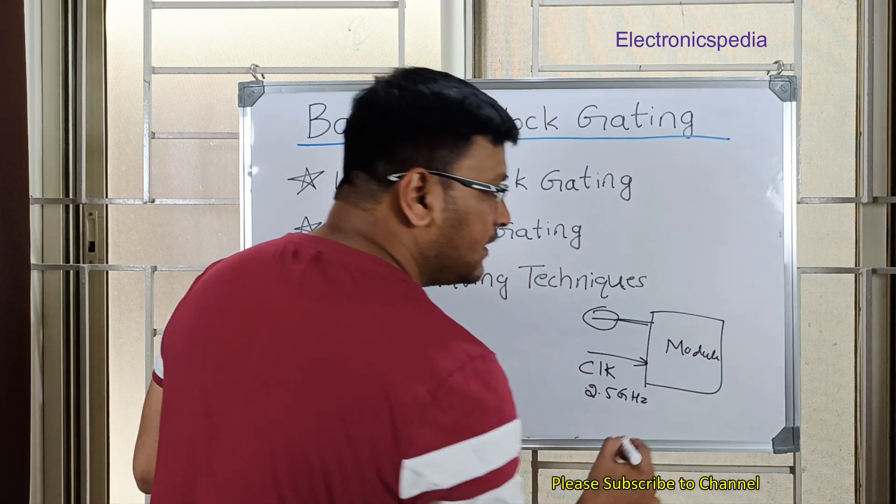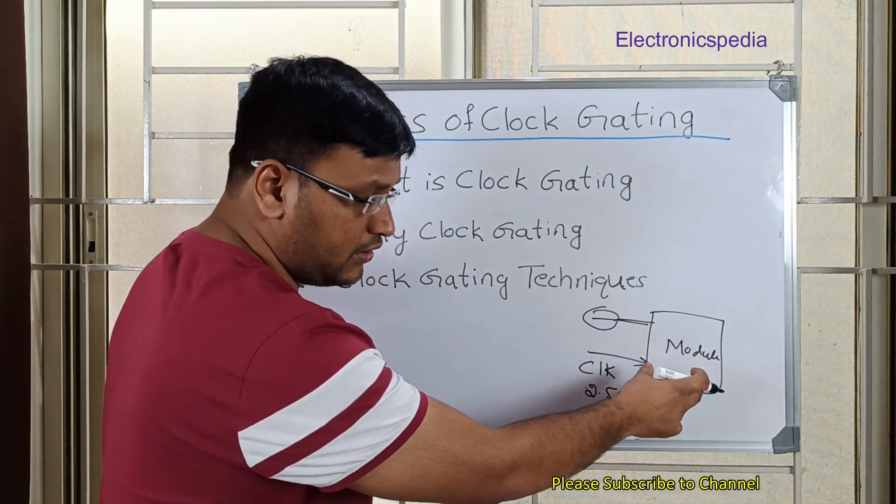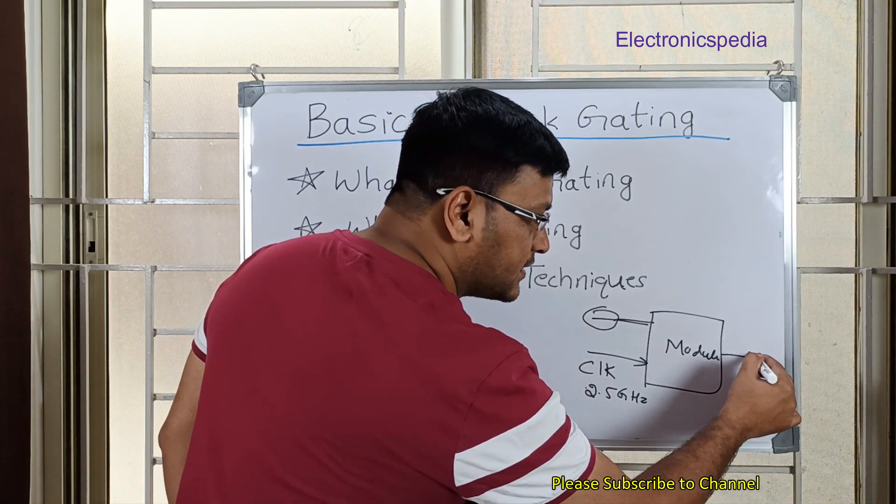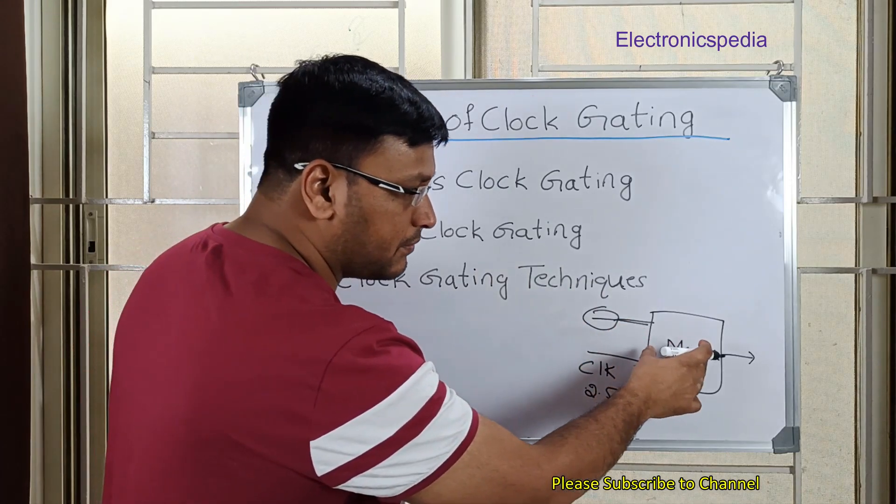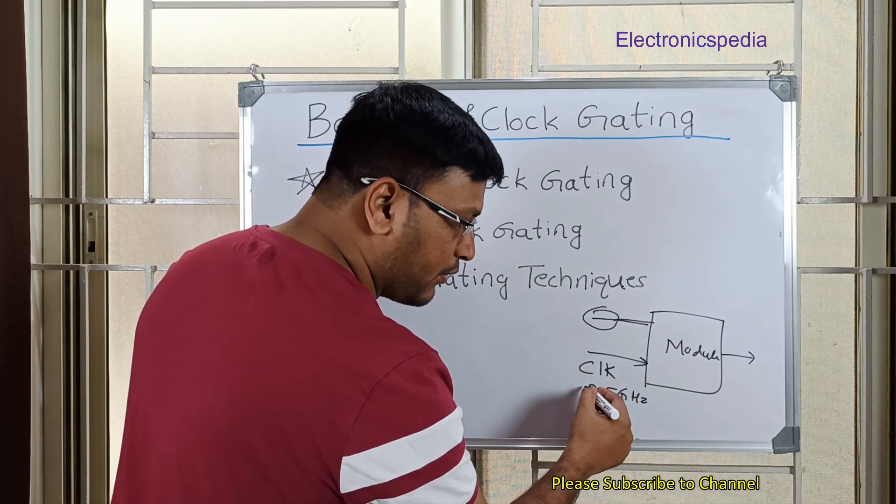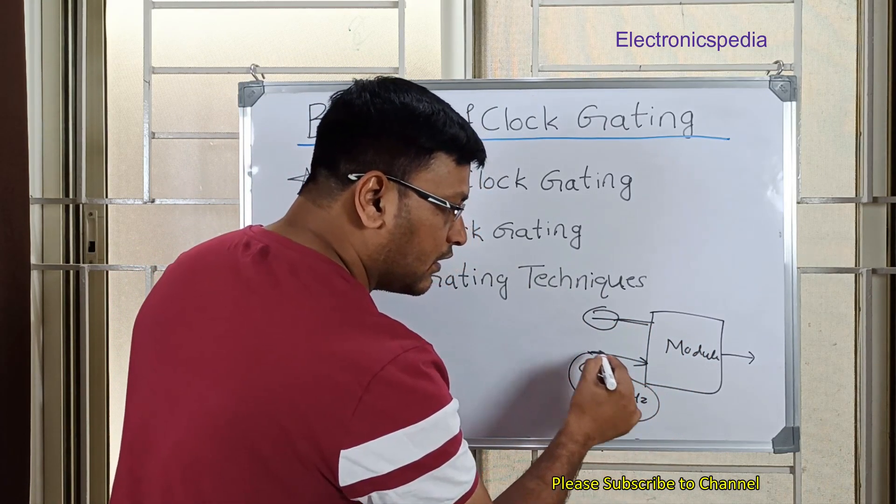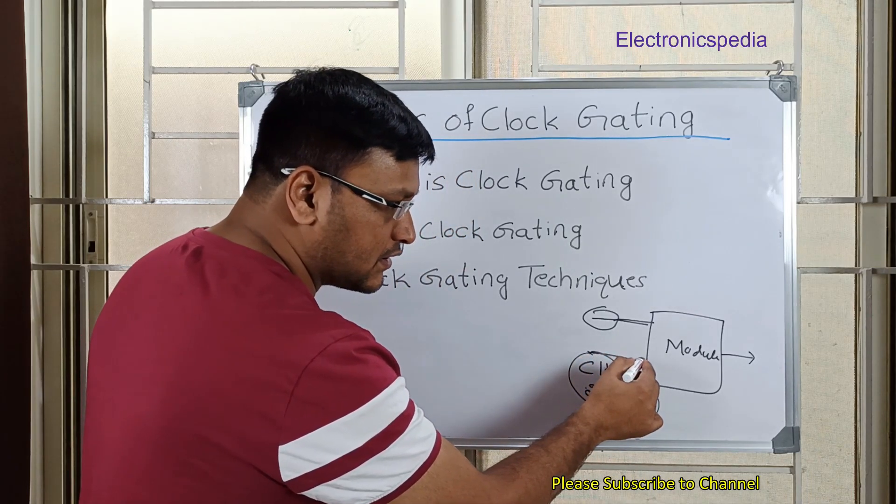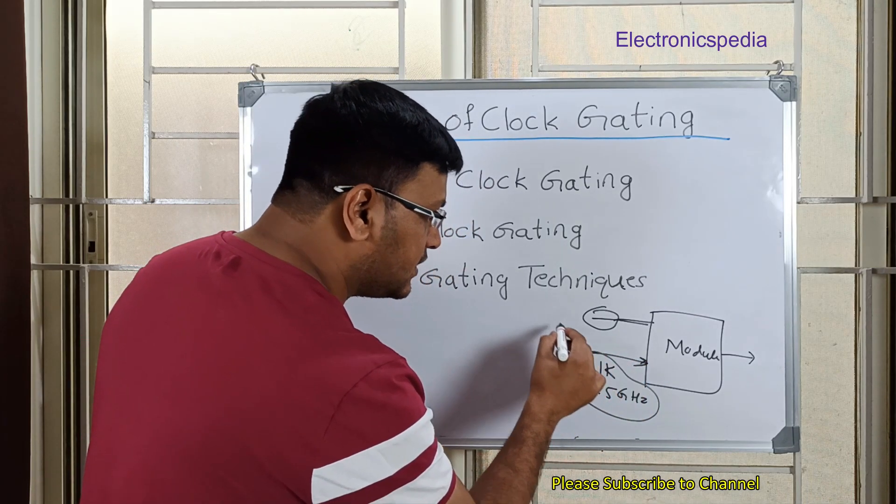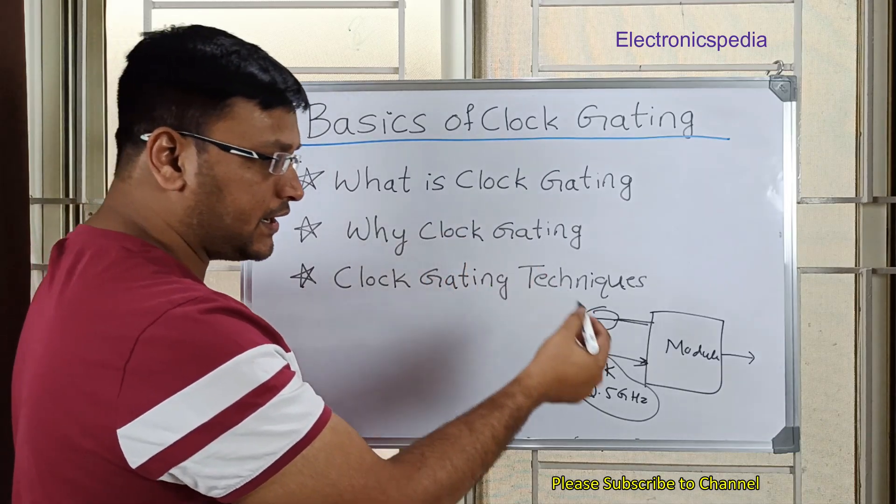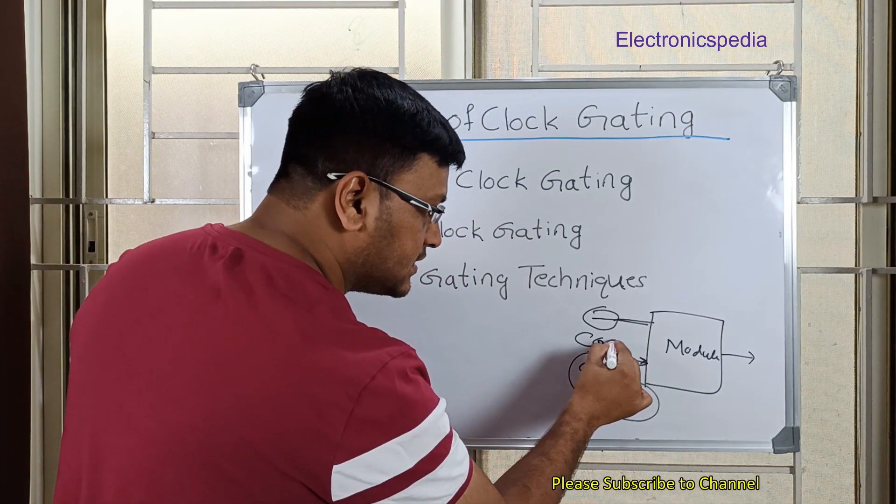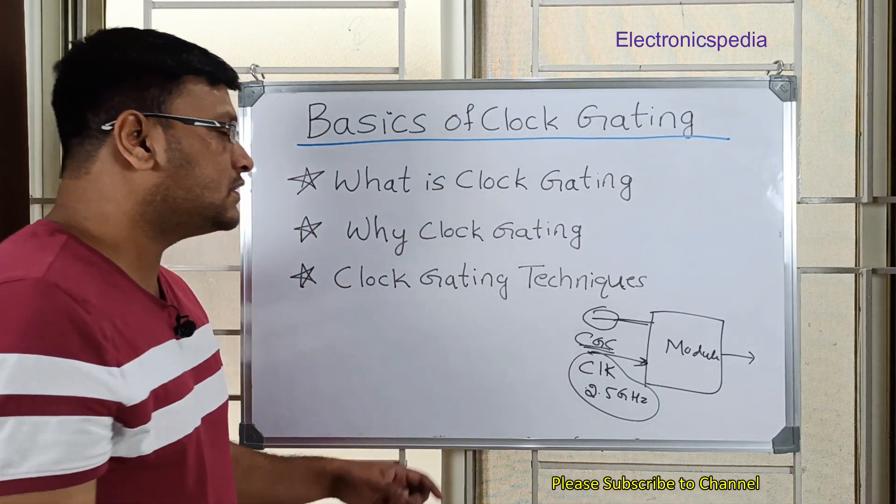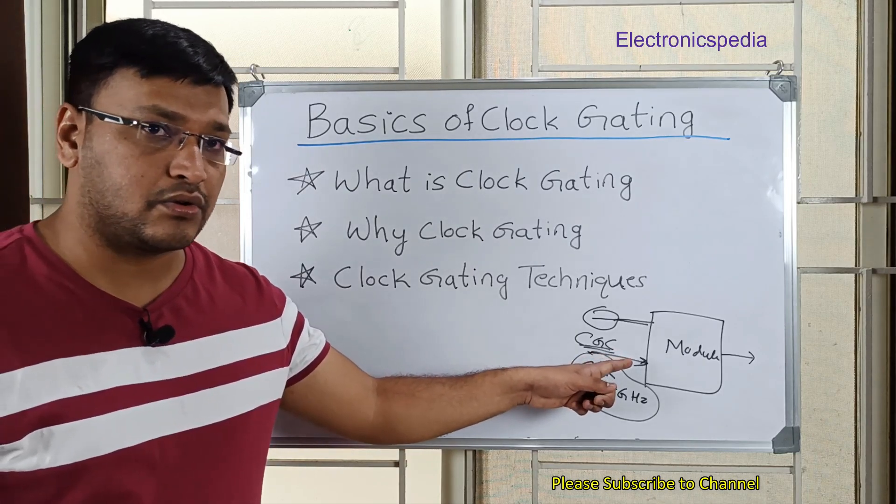Now what happens is if this particular module is not being utilized for some function, it's not being used but you are still providing the clock to this block. So now if you want to gate off this clock, you employ clock gating technique - CGC, that's what we call it. So gating off the clock to a particular module is known as clock gating.